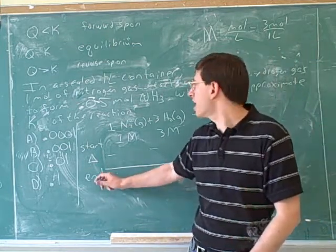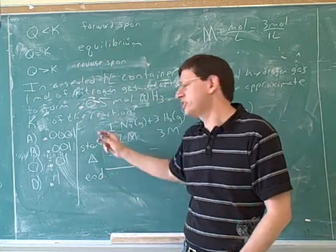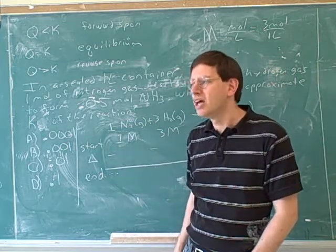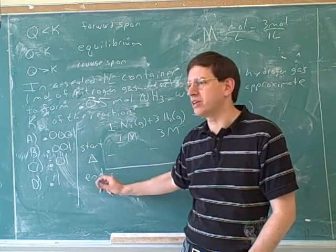The end here is equilibrium. The net reaction stops going forward when we reach the equilibrium. Maybe instead of calling it a start change end, we should call it a start change equilibrium table, in this case, because the end point is the equilibrium point. That's when the net reaction stops, when you've gotten to equilibrium. So the last row here is the equilibrium.